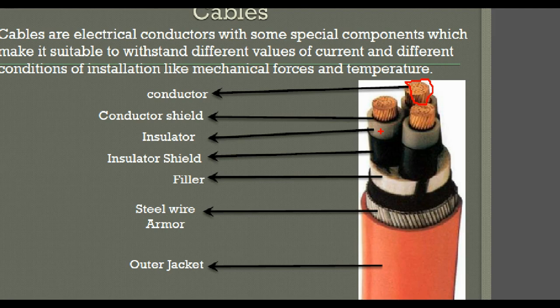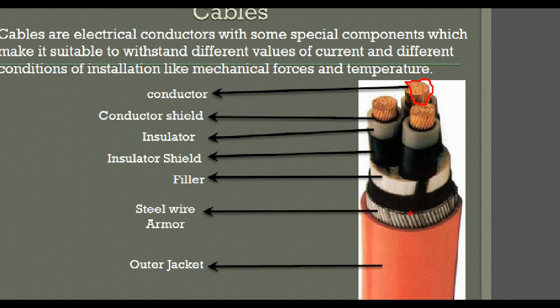The conductor is covered with a conductor shield, which is made from a semiconductor material. Then comes the insulator, which is normally made from PVC or XLPE. This is covered with an insulator shield, also a semiconductor material. Then the filler, which fills the space between the cores of the cable. Finally, the steel wire armor protects the cable from mechanical stress, and the outer jacket covers all the components of the cable.